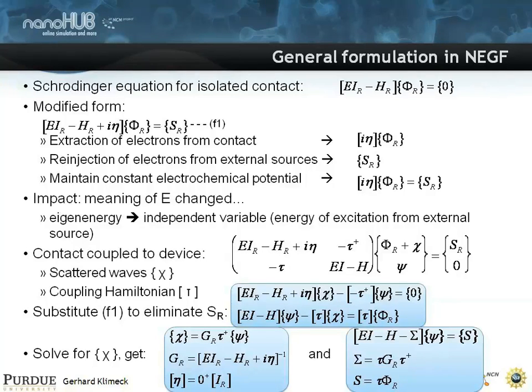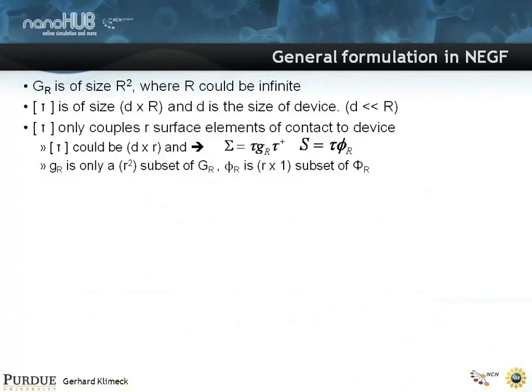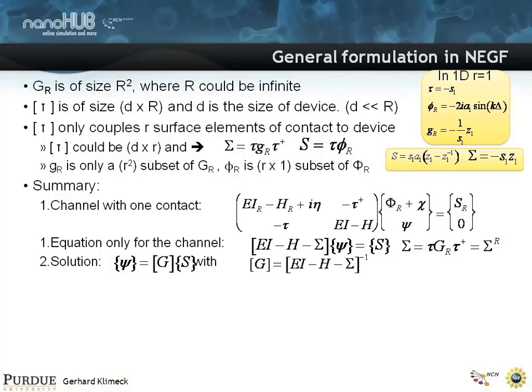That results in a self-energy that looks like this. A coupling matrix on the tau, gr, tau, dagger, with a source term. And now you can formulate this in NEGF. I'm just going to skip over this rather rapidly. Where you have identified self-energies and these source terms. And you reduce your matrix to E minus H minus sigma on some wave function times source. To E minus H minus sigma equals inverse equals R.